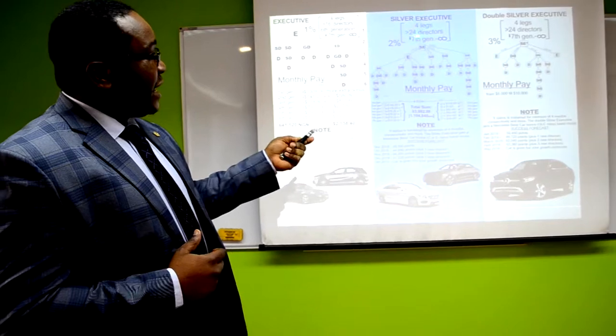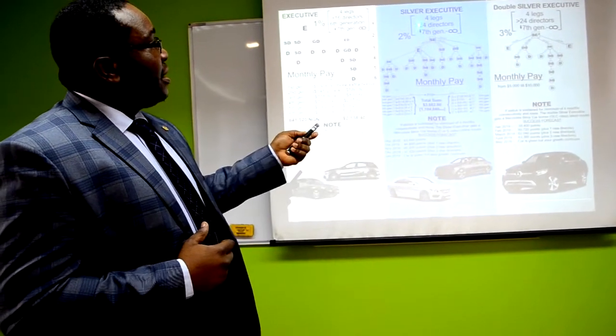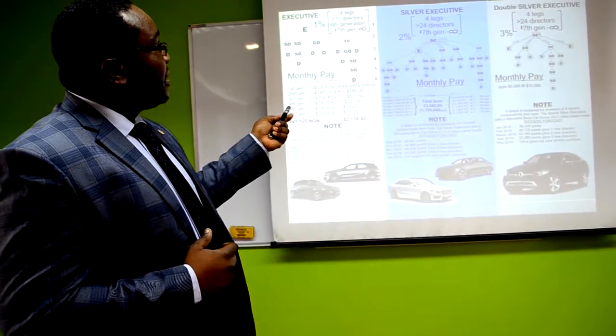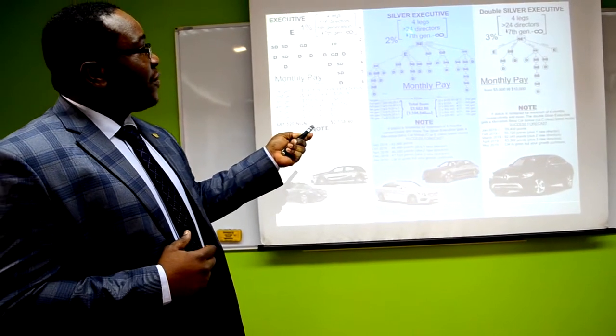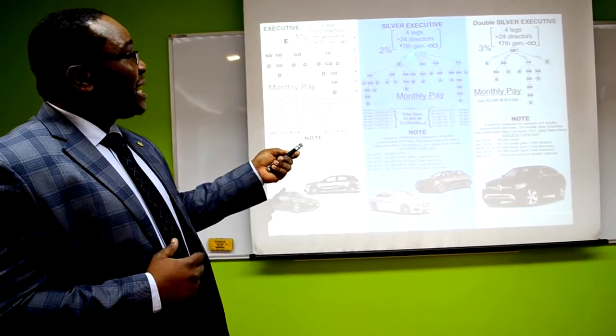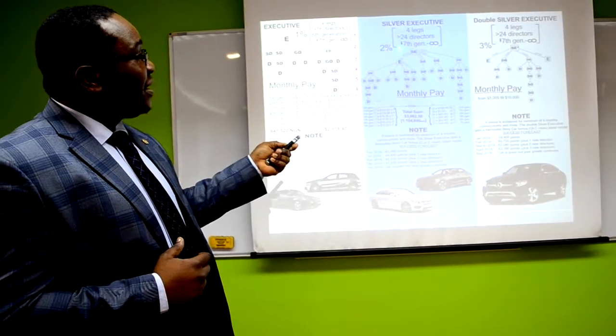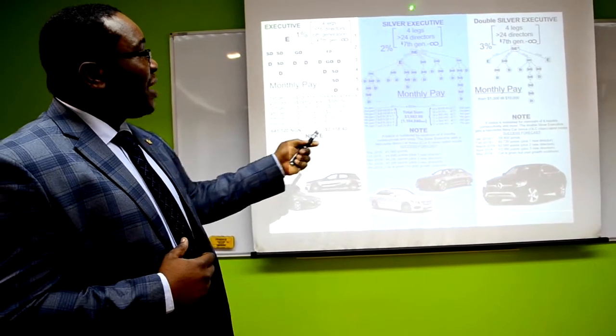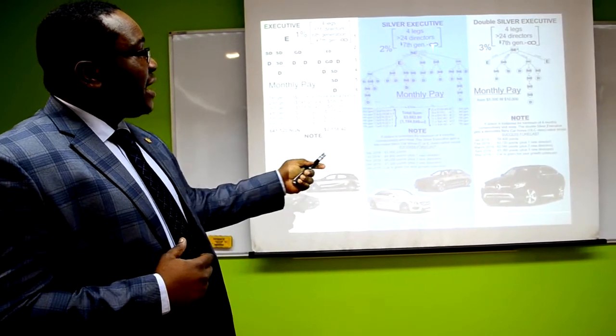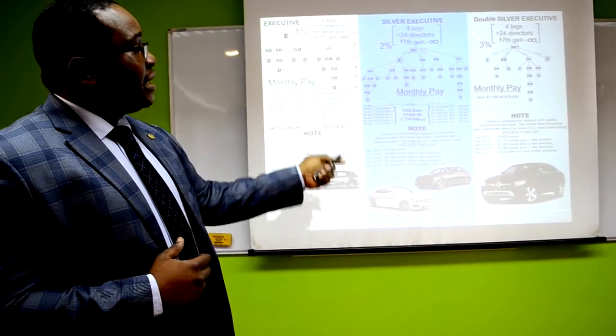Silver executive, again, still four-legged person. Now, this time here is 16 directors minimum. And here, you move up to 24 directors. But being a silver executive, you have an executive under you. So you have two parts. The executive leg and the rest three legs regarding the director status.